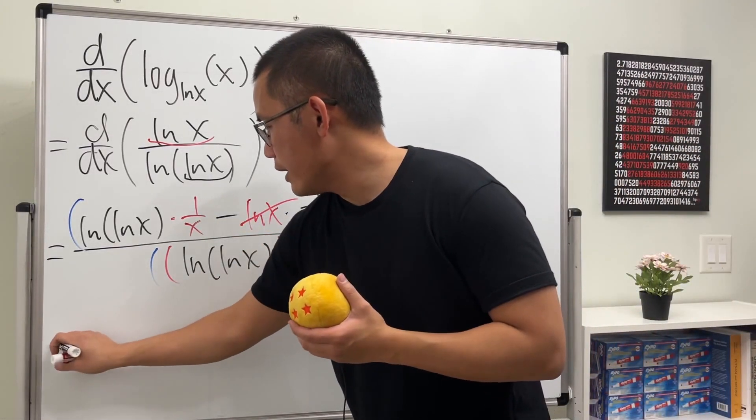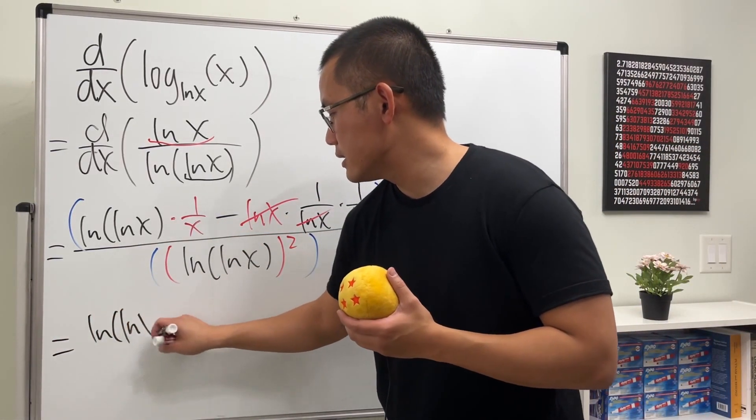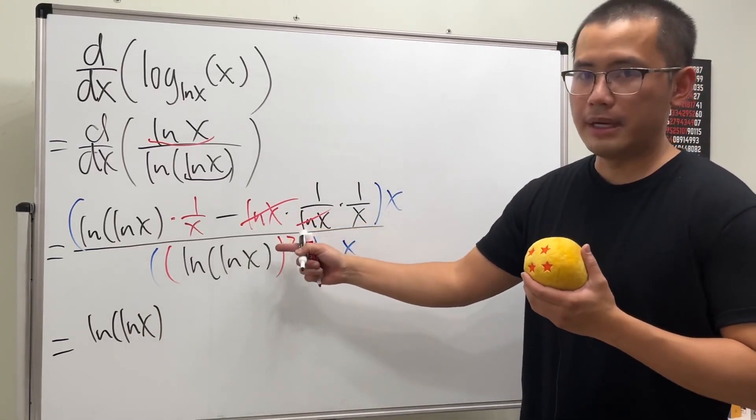this times x will just get ln(ln(x)) like this. And then this times x cancel, but it will just be minus 1. Good.